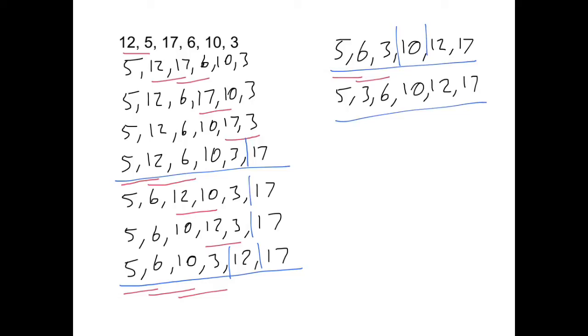So we now don't consider from the 6 onwards. And then we compare the last two. 5 and 3, they need to be swapped. So we get 3, 5, 6, 10, 12, 17.